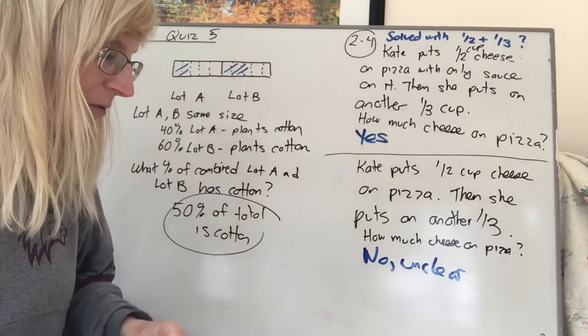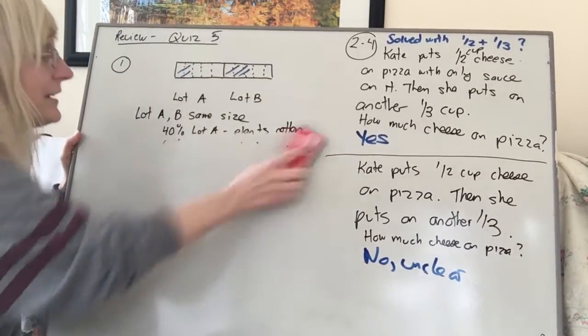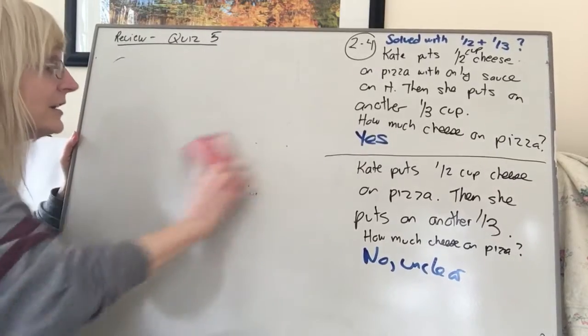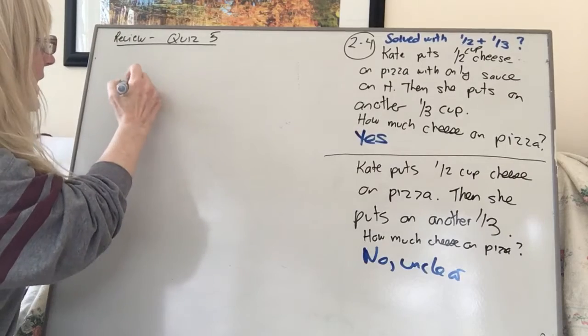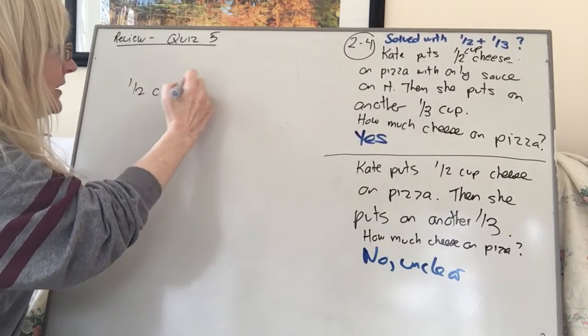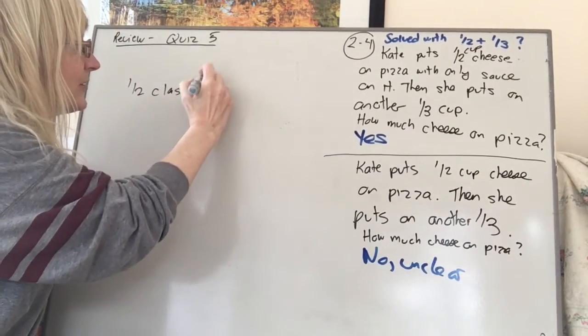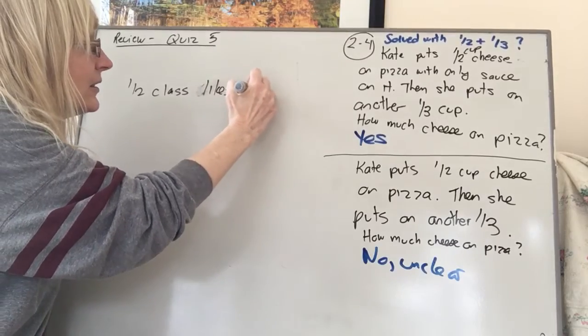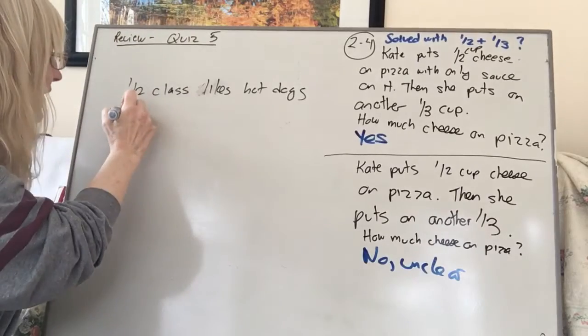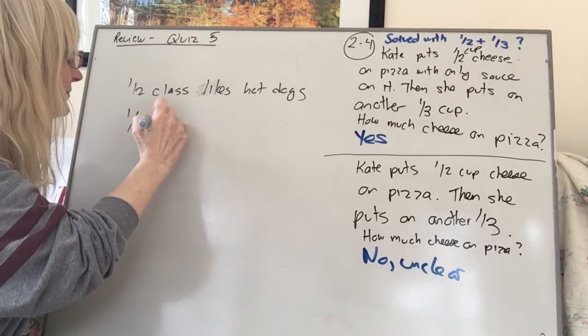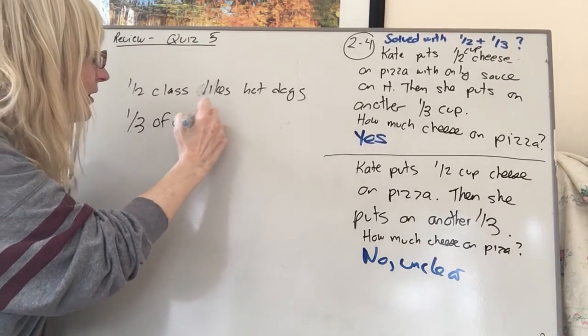Okay. Then there's going to be a third question, which I didn't have room to write, so I'm going to write it quickly. Let's say we had 1/2 of a class likes hot dogs. Okay. Half of a class likes hot dogs. A third of the class likes hamburgs.